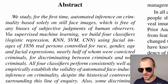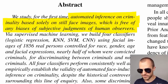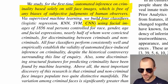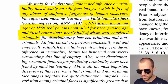On a high level, they're trying to separate criminals from non-criminals using face images — basically using classifiers on ID photos. They say: 'We study, for the first time, automated inference on criminality based solely on still face images, which is free of any biases and of subjective judgments of human observers.' They train a bunch of models, including a CNN, using facial images of 1856 real persons controlled for race, gender, age, and facial expressions.